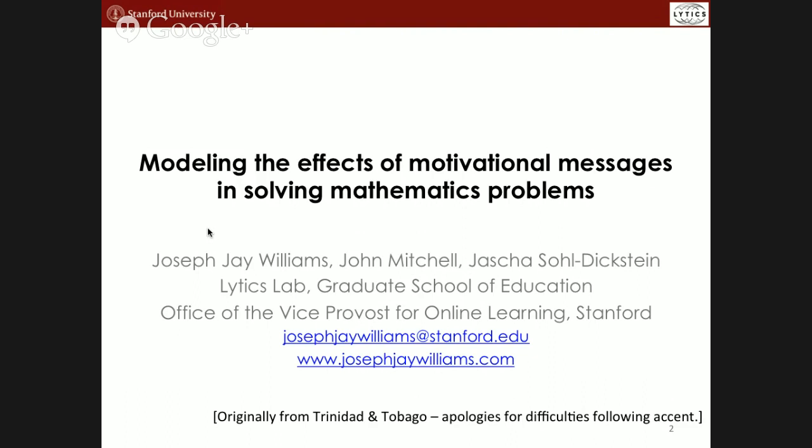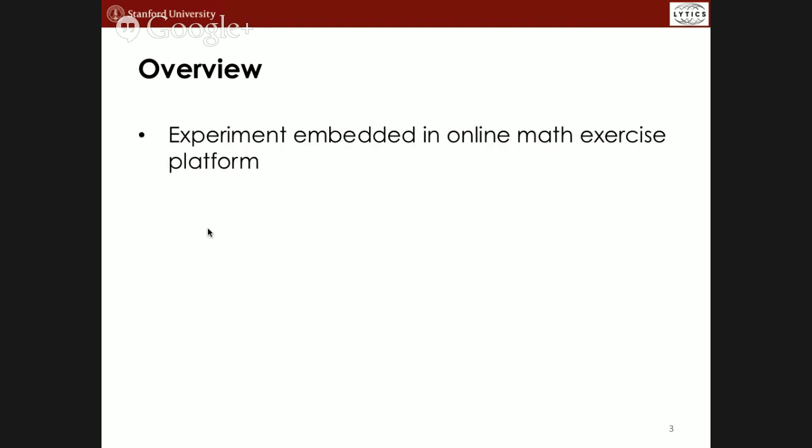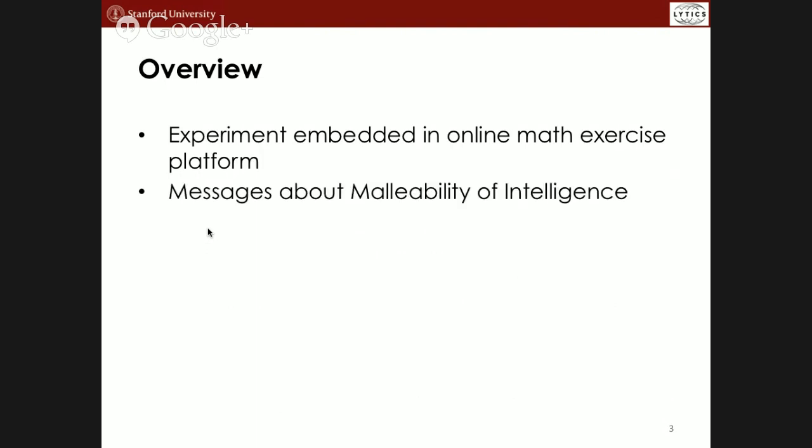This work was done in collaboration with John Mitchell, the Vice Provost for Online Learning, and Josh Spodek, who is at Stanford and also at Khan Academy — an online education platform that offers videos and exercises. The experiment we conducted could be thought of as a standard psychology experiment, but the particular theme was: how can we insert messages that teach students growth models of intelligence in a way that helps them learn? We then looked at how to ask questions that we wouldn't be able to ask from a typical psychology experiment, given this high-dimensional environment.